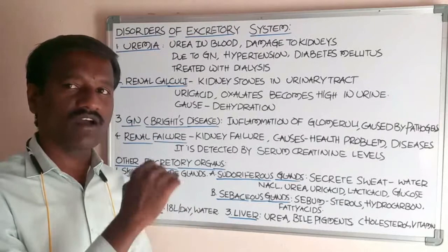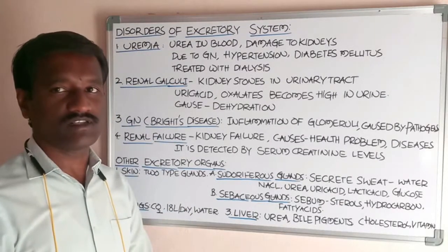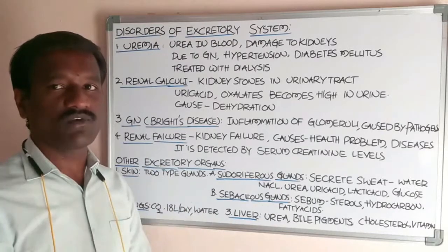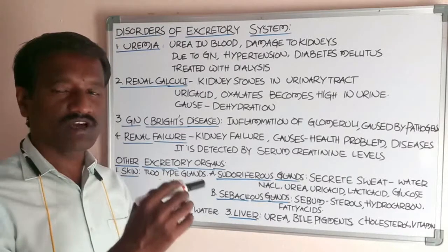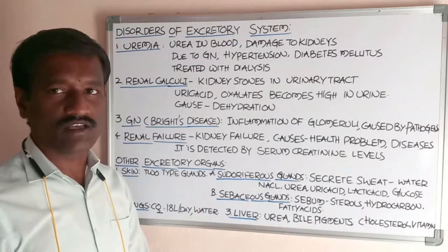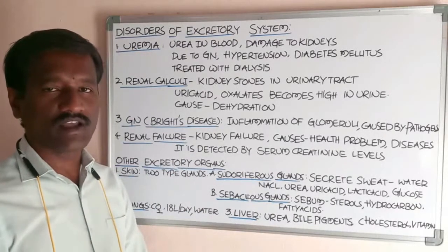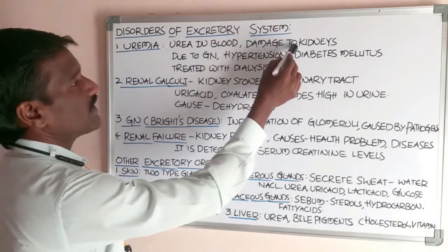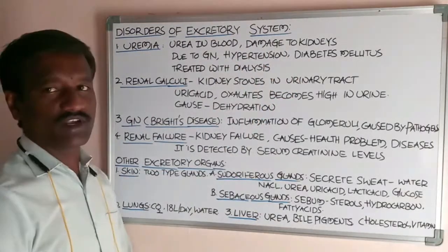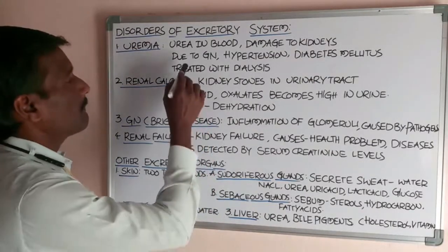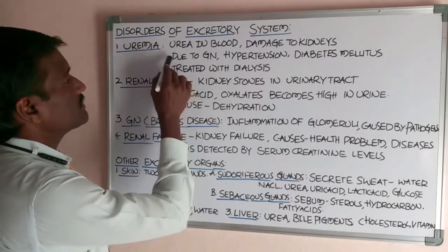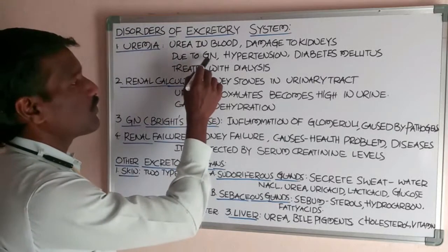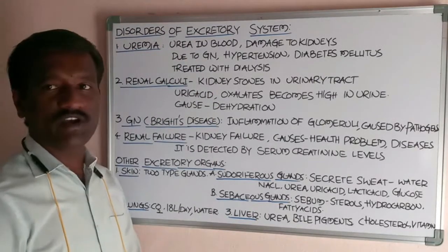Urea is found in the liver cells, and through the circulatory fluids it reaches the kidneys for elimination. If this process is disrupted, it leads to damage of the kidneys. Uremia occurs due to glomerulonephritis.